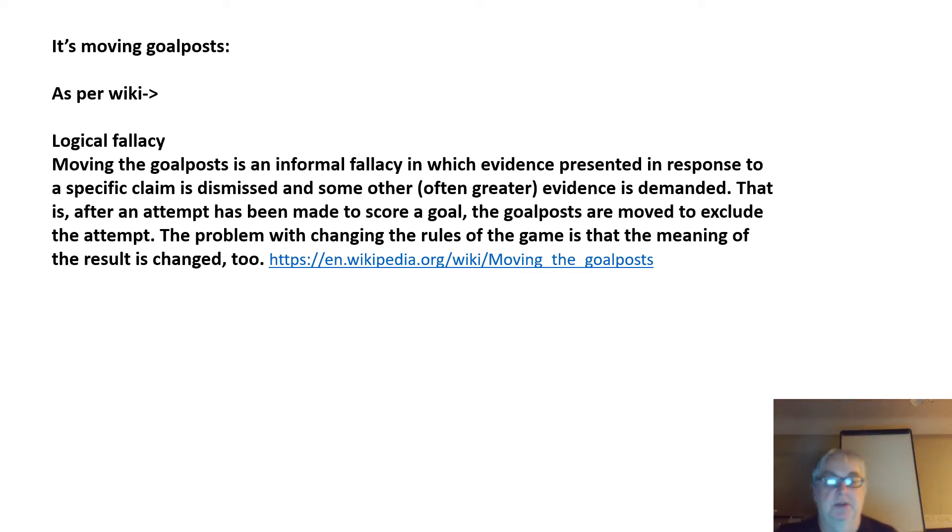Moving the goalpost is an informal fallacy in which evidence presented in response to a specific claim is dismissed and some other, often greater, evidence is demanded. In this case, Einstein is talking about light speed in his 1905 paper, and then suddenly we have to move the goalposts and interpret it in extra terms of one-way and two-way light speed—something Einstein never talked about.